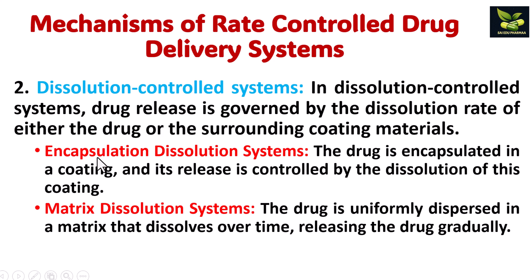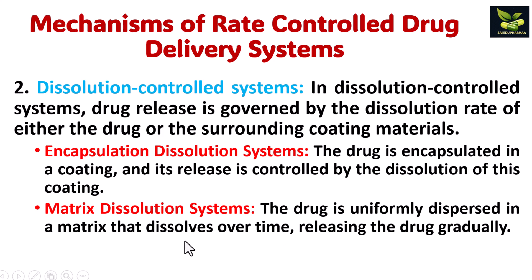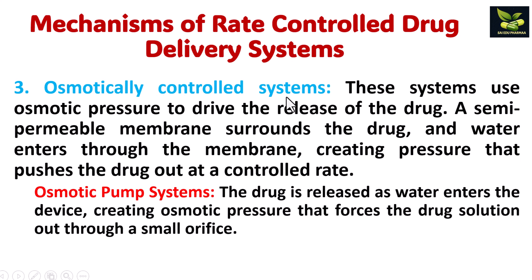Next is the dissolution controlled system, in which the dissolution rate of either the drug or surrounding coating materials is governed. There are two types: encapsulation dissolution systems and matrix dissolution systems. In encapsulation, similar to the reservoir system, the drug is encapsulated in a coating and its release is controlled by the dissolution of this coating. In matrix dissolution systems, the drug is uniformly dispersed in a matrix that dissolves over time, gradually releasing the drug.